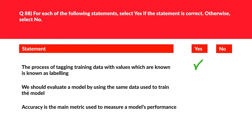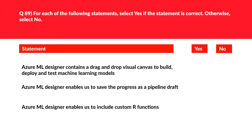Statement 2 says we should evaluate a model using the same data used to train it. We should use different data to evaluate, not the same data, so this statement is incorrect — the answer is no. Statement 3 says accuracy is the main metric used to measure a model's performance. Since precision and recall are also important metrics in a classification scenario, accuracy alone is not sufficient — so the answer is no. We log this as the correct answer.